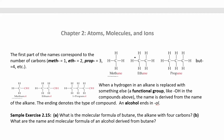With two carbons, you have one bond between them, then three hydrogens on each side. Alkanes all end in -ane and have only carbon, hydrogen, and single bonds. If you have double bonds, it becomes an alkene; triple bonds make it an alkyne. The prefixes are meth, eth, prop, and but. One carbon is methane, two is ethane, three is propane, four is butane.